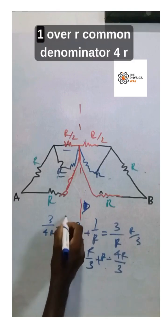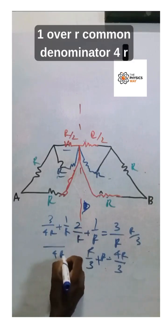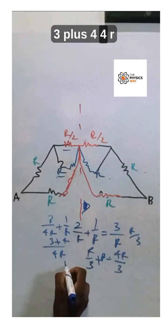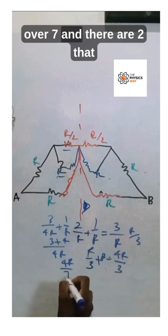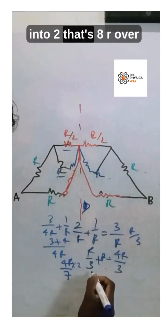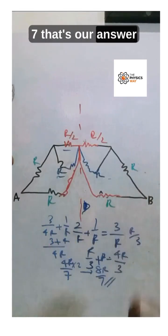So we get 4R over 7, and there are two of those, so multiplied by 2, that's 8R over 7. That's the answer.